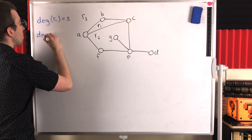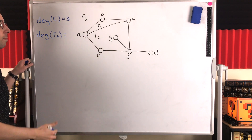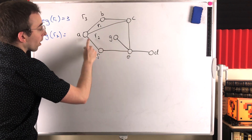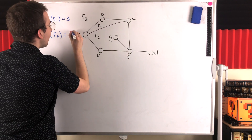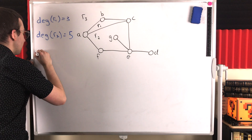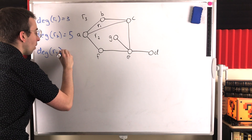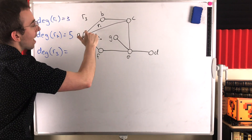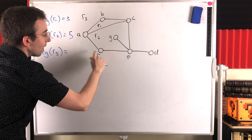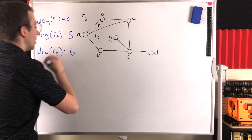How about the degree of the region R2? How many edges are in its boundary? That would be one, two, three, four, five — there are five edges in the boundary of R2, so that is its degree. And then finally, the degree of the region R3 — well, R3 has one, two, three, four, five, six edges in its boundary, so its degree is six.